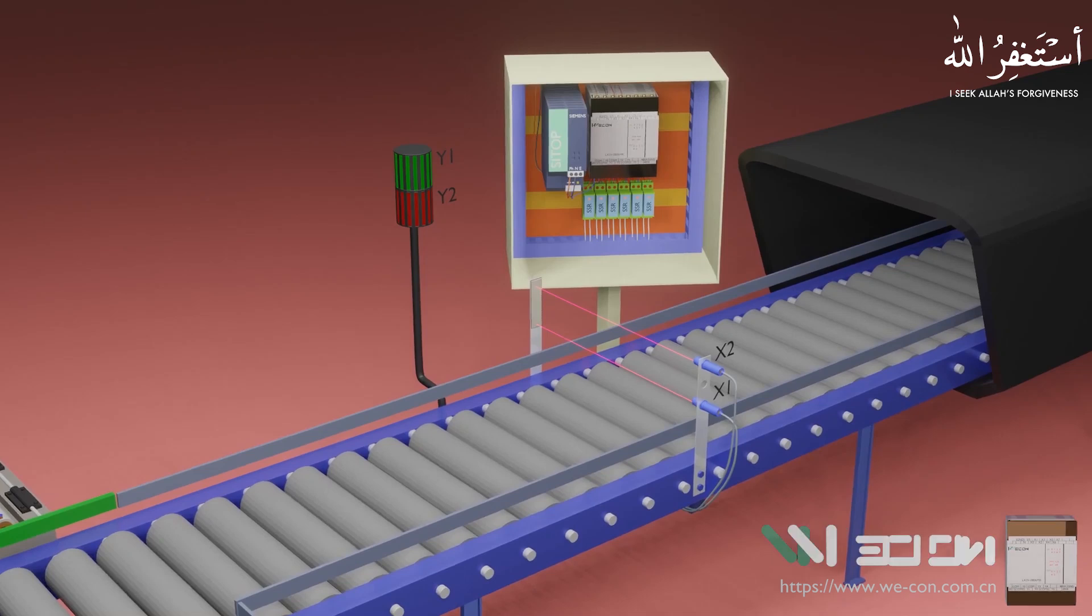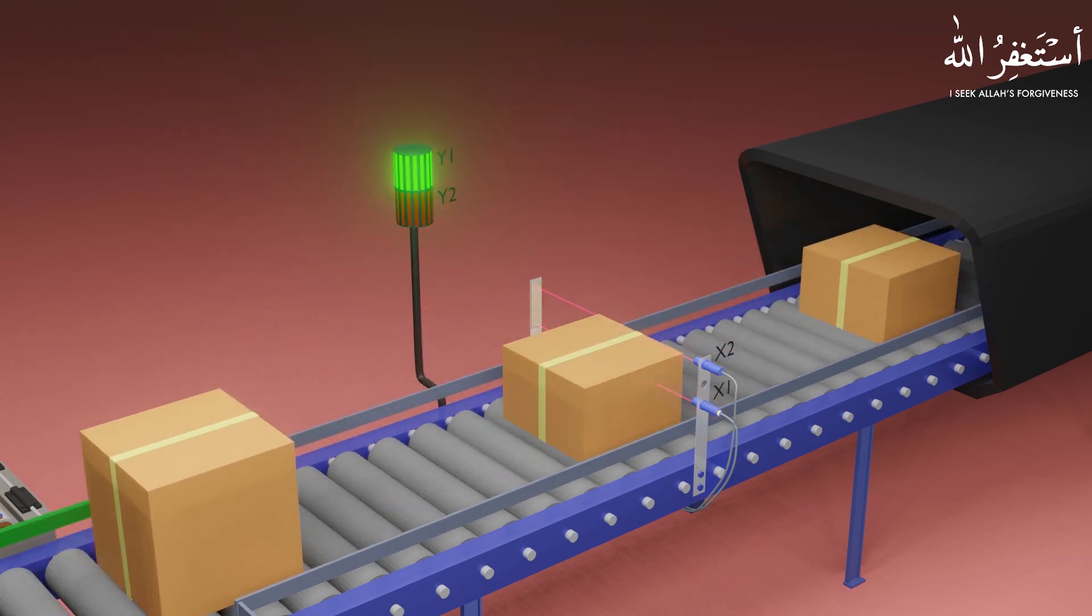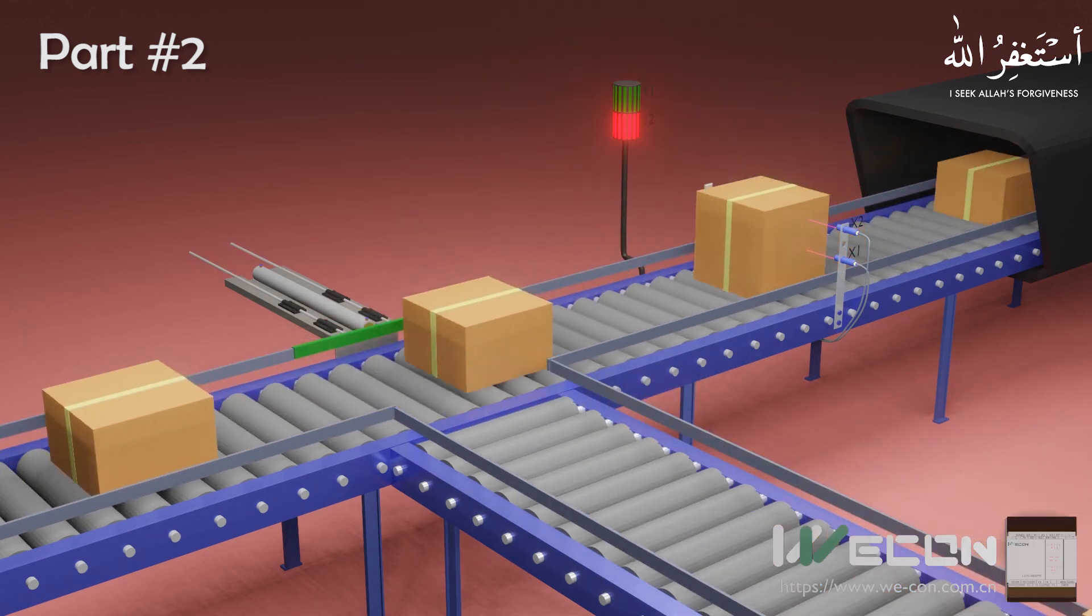Welcome to another training session on PLC programming. This is a two-part video tutorial series. In part one, we will learn how to detect the size of boxes using two sensors. In the second part, we will learn how to divert and move boxes on different conveyors depending upon different box sizes.